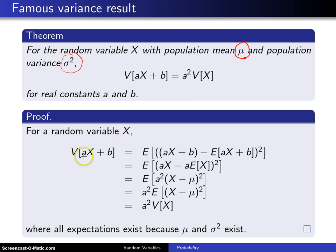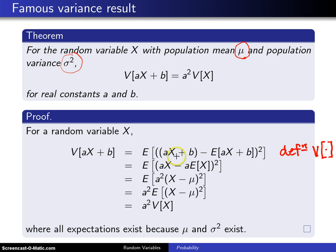For a random variable x, the variance of ax plus b is equal to the expected value of ax plus b minus the expected value of ax plus b, all squared. That is true by the definition of the variance. Note that ax plus b is itself a random variable, and the variance of a random variable is the expected value of that random variable minus the expected value of the random variable, all squared.